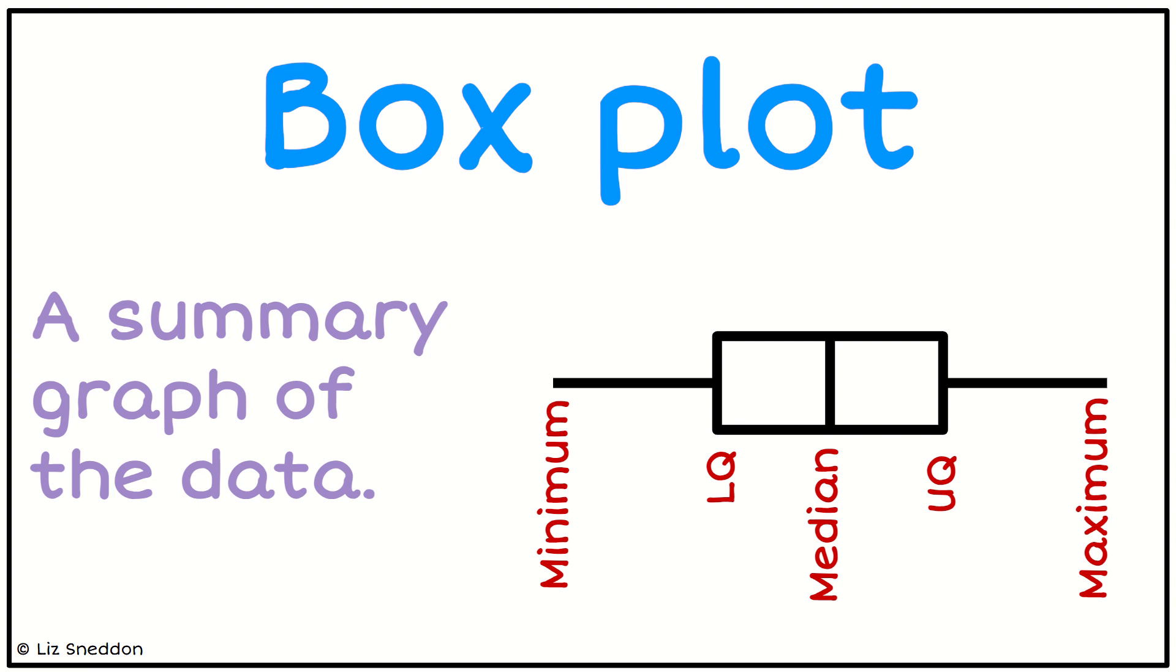A box plot is a summary. It takes your dot plot and summarizes it, showing that lots of the data is in the middle where the box is, and the data goes as far as the whiskers go. So it's a way of summarizing the data.